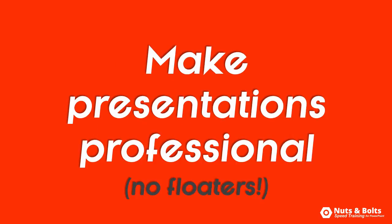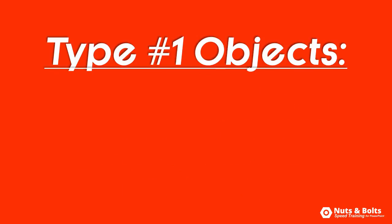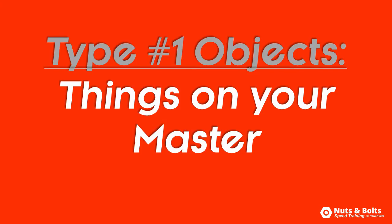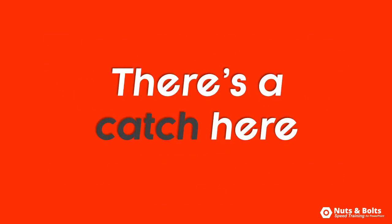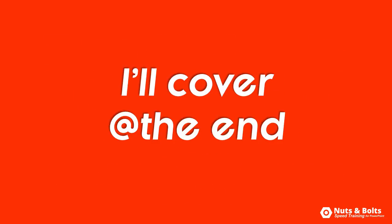You don't want things floating around between your slides. I define type 1 objects as anything that's set on your slide master — so titles, footers, page numbers, content holders, etc. But there's a catch here with your content containers, which I'll cover at the end of this video.